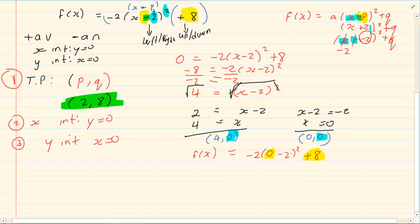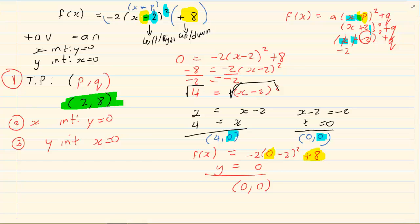So what do I have here? Minus 2 squared is 4. 4 times negative 2 is negative 8. Negative 8 plus 8 is 0. So my coordinate is x is 0, y is 0. Where did I get my x is 0 from? Because we did y intercept and at y intercept x was 0. So what are the coordinates that we have? We have 4 and 0, we have 0 and 0, and we have 2 and 8.